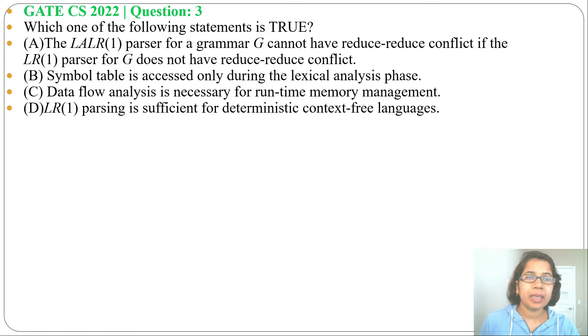Option A: The LALR(1) parser for grammar G cannot have reduce-reduce conflict if the LR(1) parser for G doesn't have reduce-reduce conflict. By merging same LR(0) items of LR(1), we get LALR(1).